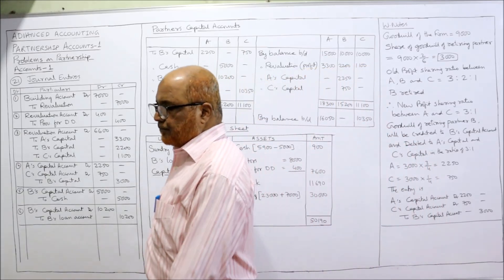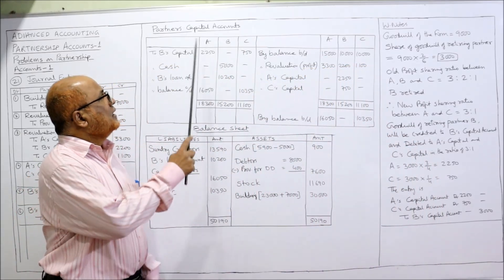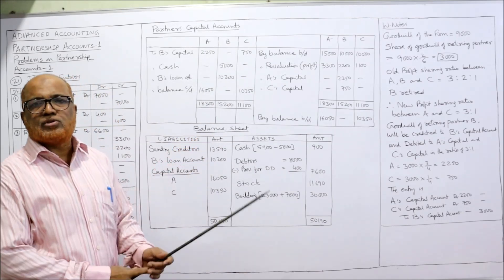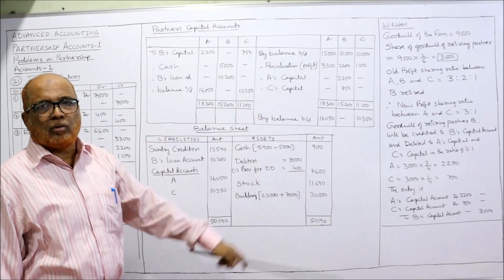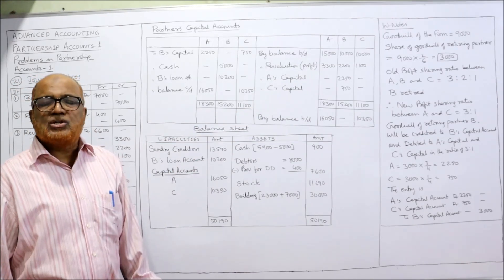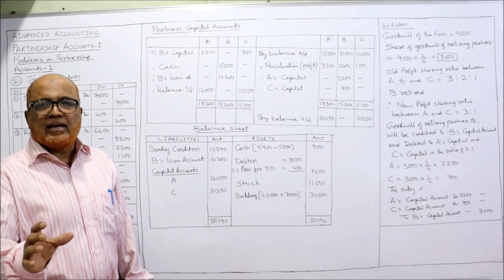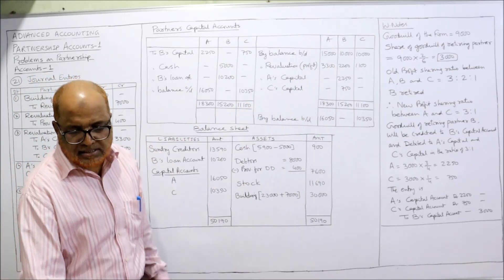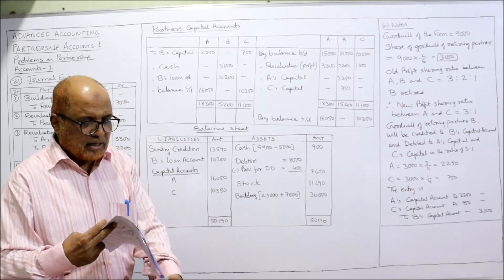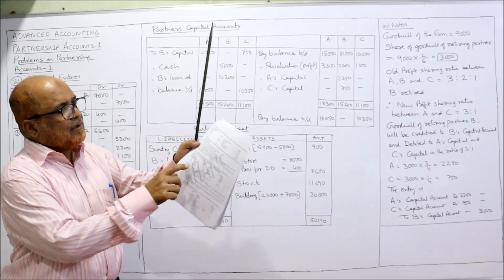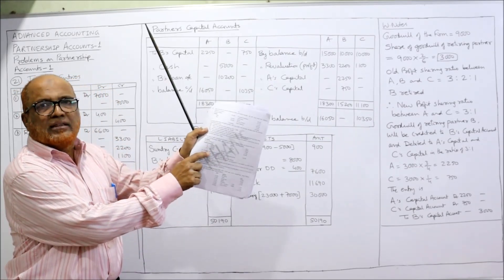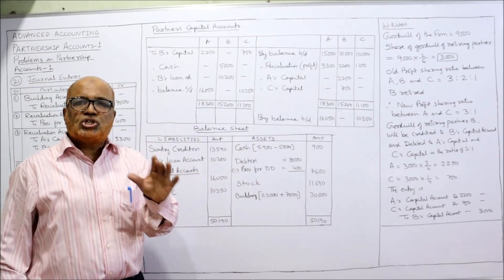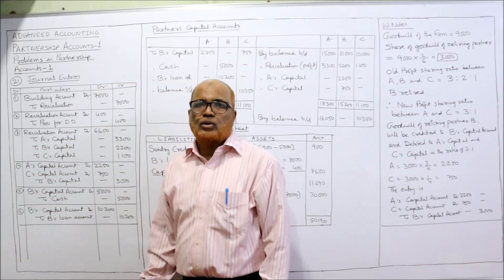Now making the capital accounts of A, B, and C — three columns on debit side, three columns on credit side. By balance brought down, in the balance sheet: A's capital was 15,000, B's capital 10,000, C's capital 10,000. These are the opening capitals. Now what is the share of revaluation profit?